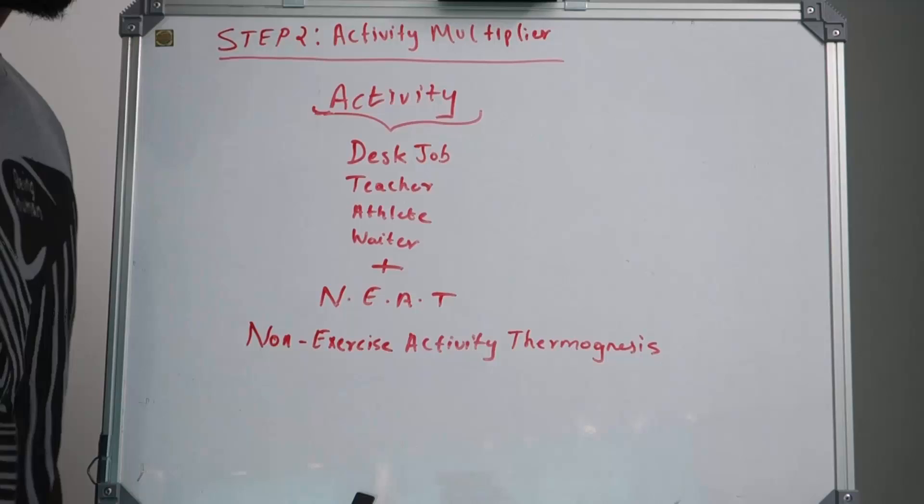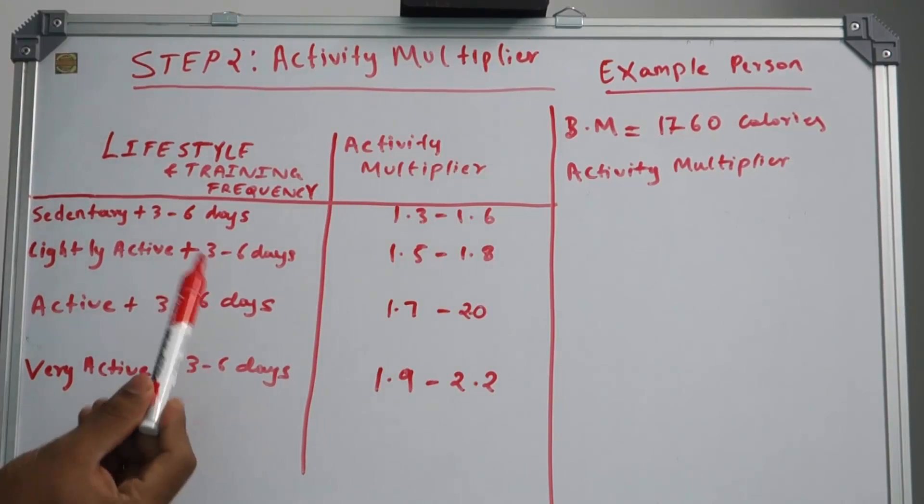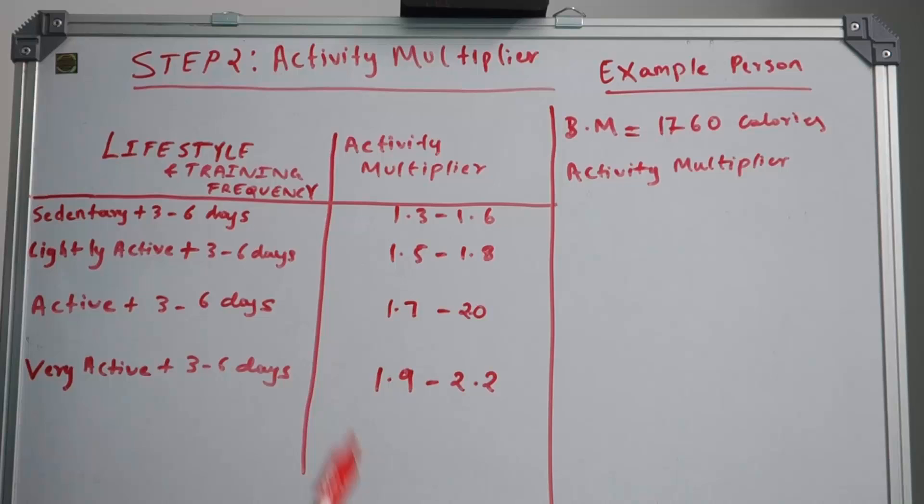We are at the final step and this is very simple but still people make this very complicated. We have this table: lifestyle and training frequency. Lifestyle is something like if you are an engineer you're at a desk job—you are sedentary. If you are a carpenter you are likely active or maybe highly active.